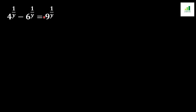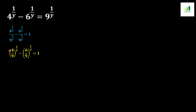In order to solve this equation, we first divide both sides by 9 to the power 1 over y. After dividing, we get 4 to the power 1 over y over 9 to the power 1 over y, minus 6 to the power 1 over y over 9 to the power 1 over y, equal to 1.